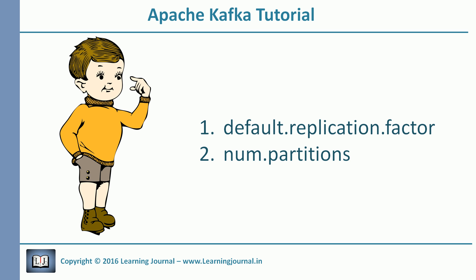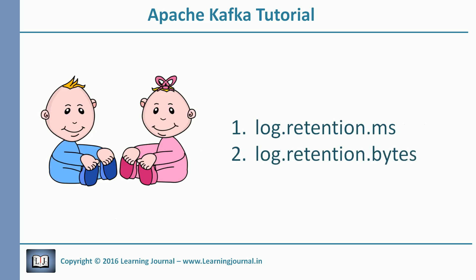Default replication factor and num partitions — these two parameters are quite straightforward. The default values for both of them is one, and they are effective when you have auto create topics enabled. So if Kafka is creating your topic automatically, the new topic will have only one partition and a single copy. If you want some other values, you can change the default settings accordingly.